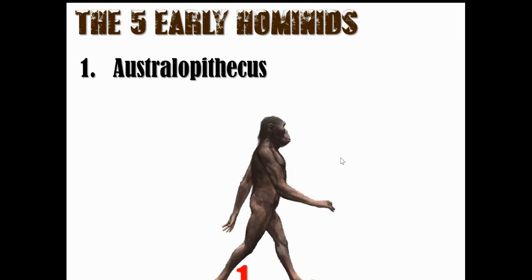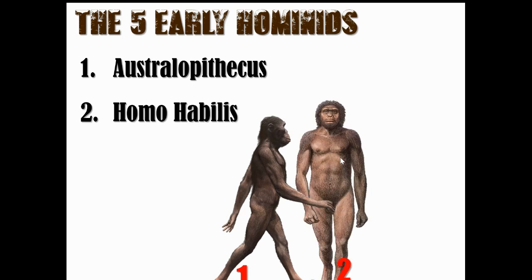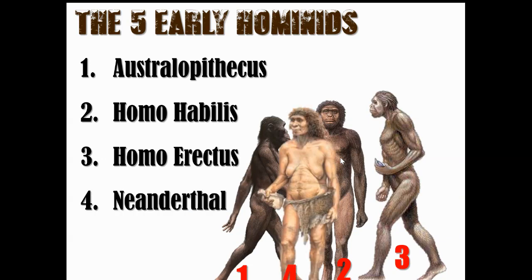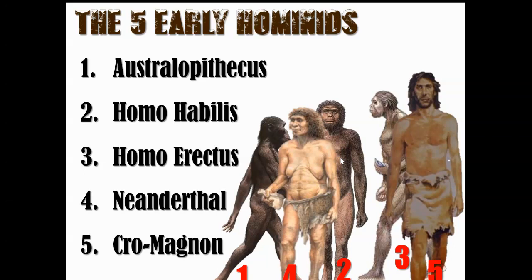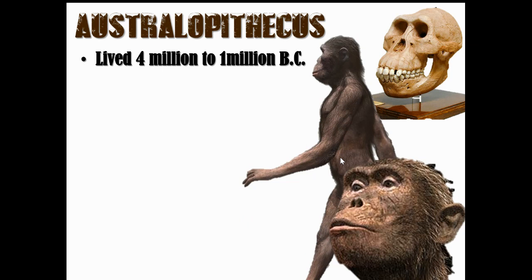Humanity moved around because they were hunting for food. With humanity, we have certain stages. The first was the Australopithecus — I'm obviously going to say these things wrong. Next is the Homo habilis. Then Homo erectus — we start to see more human-like appearance. Then the Neanderthal, and finally Cro-Magnon — and that's us. So these are the five early hominids.